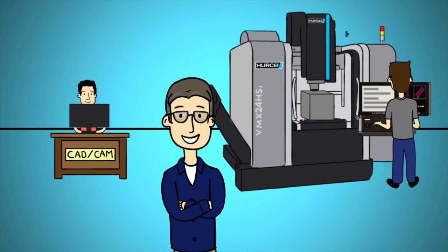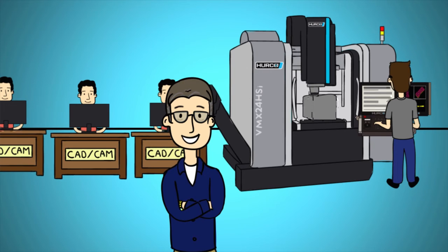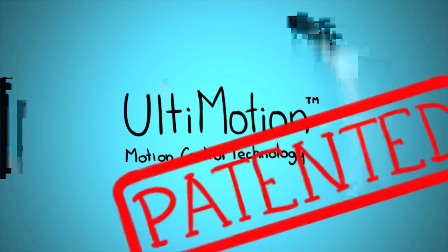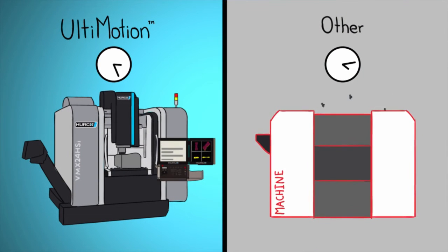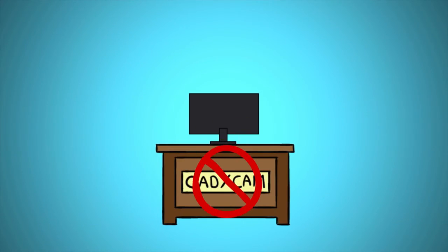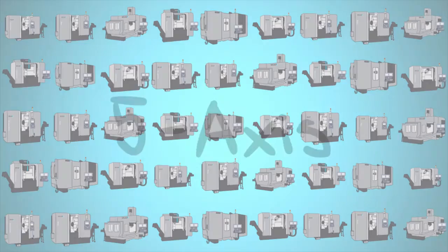Not a conversational shop? No problem. Herco innovates for NC shops, too, like Ultimotion, our patented motion control system for NC and conversational parts that reduces cycle times up to 30%. It's not in your cam package, but it's in every Herco machining center, even our 5-axis ones.